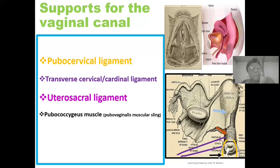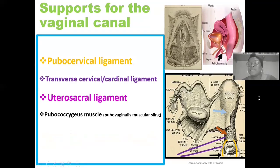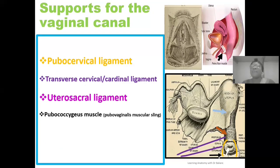The next structure providing support is the pubococcygeus muscle. The pubococcygeus muscle is one of the muscles forming the structural component of the levator ani. From the pubococcygeus, strands of muscle fibers — the pubovaginalis — run around the wall of the vagina, acting like a muscular sling and helping to support the vaginal wall and maintain alignment of the vagina canal.